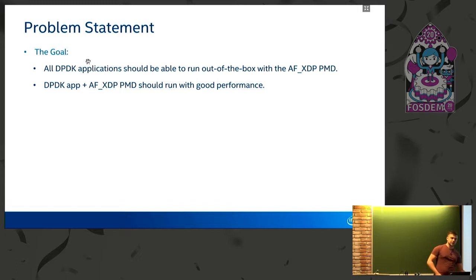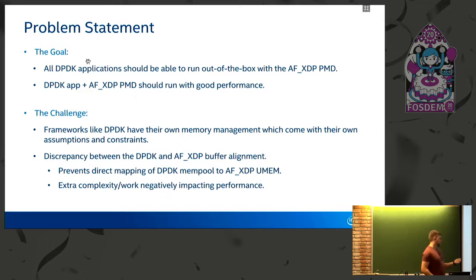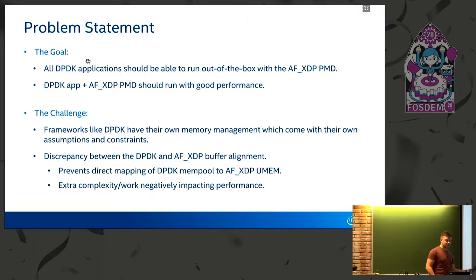The performance we were aiming for was close to or on par with the kernel sample app xdpsock. The challenge was that frameworks like DPDK have their own memory management, and these come with constraints and assumptions of their own. Specifically, there is a discrepancy between the DPDK and the AF_XDP buffer alignment, which prevents us from mapping DPDK memory buffers directly to AF_XDP umems. Doing that mapping required extra work and complexity which negatively impacts performance.